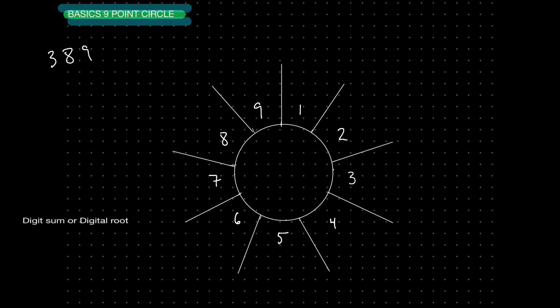So if I have the number 389 and I want to find out which spoke it lands on, I'm going to add those together: 3 plus 8 plus 9. 3 and 8 give me 11. 11 plus 9 gives me 20. Now remember, you want to keep going. So then you add 2 plus 0 — that takes me back to 2. So the number 389 lands on spoke number 2.